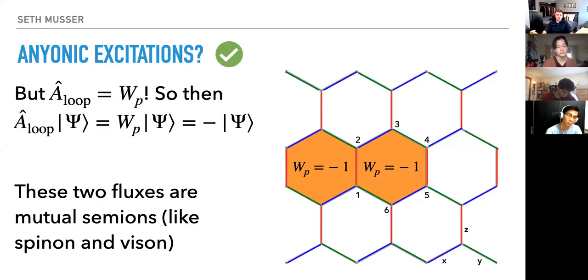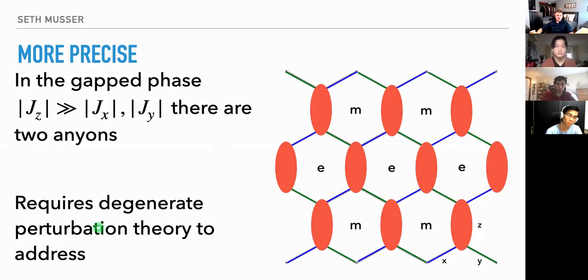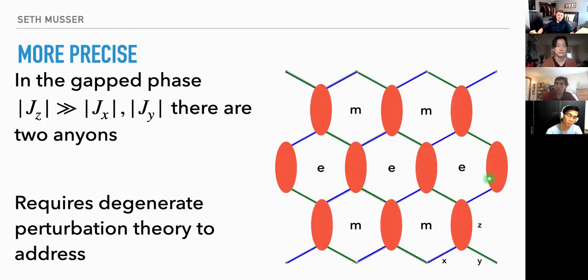To be more precise, you have to use degenerate perturbation theory in the limit K_z much greater than K_x and K_y. In that limit we have strong pairing along the z direction and the lattice breaks into chains with two types of anyons: the e and m anyons. I won't go into full detail, but there is anyonic behavior, so hopefully you can be satisfied that this is a spin liquid by our criteria from last time.